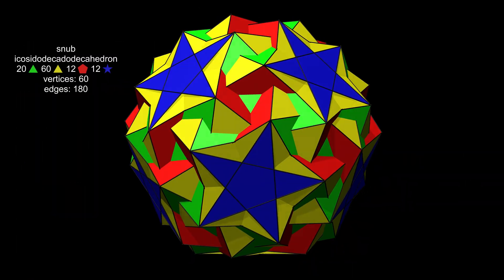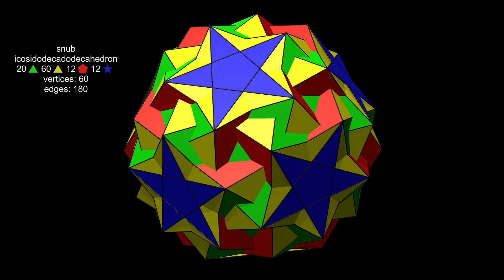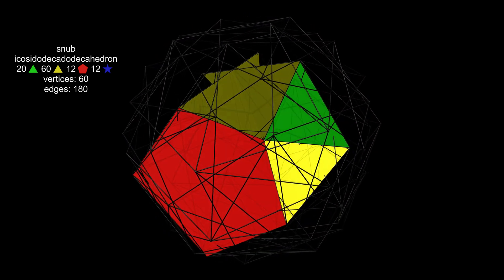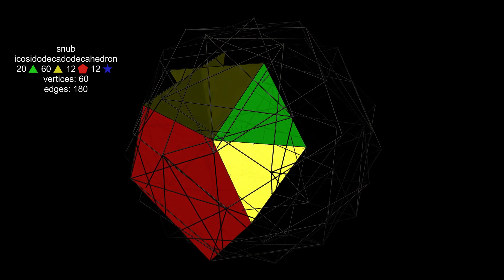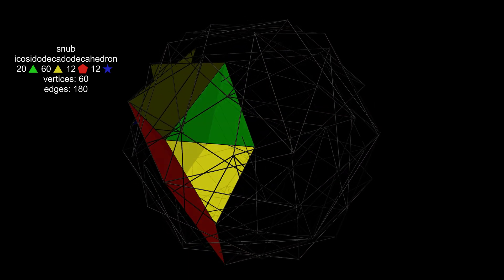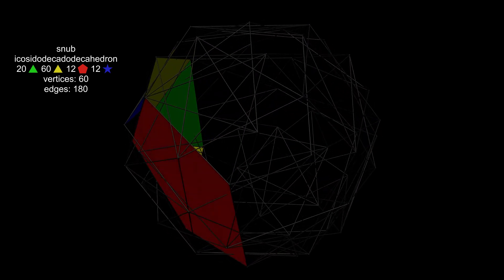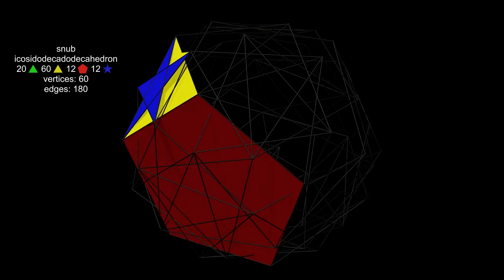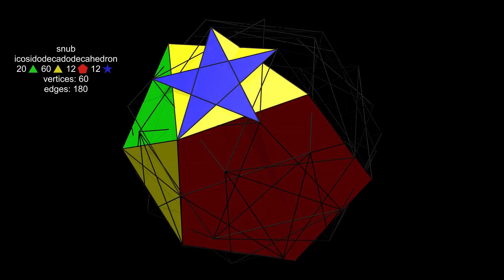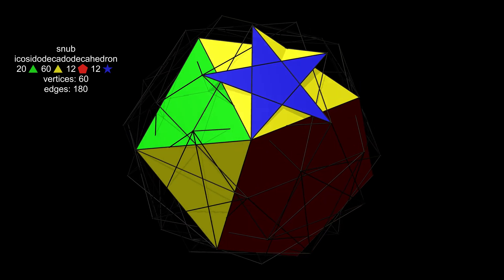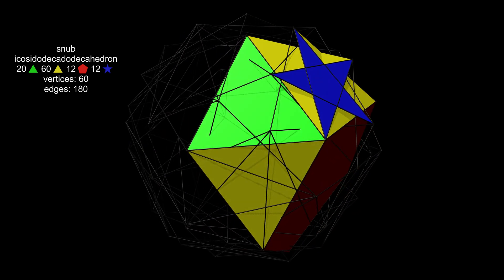We'll start with the snub icosidodecadodecahedron. Let's look at just the faces around a single vertex. I've left the edges in place purely to show the sheer complexity of the structure. This has six faces around the vertex, which is typical of a snub. Three main faces separated by so-called snub triangles.